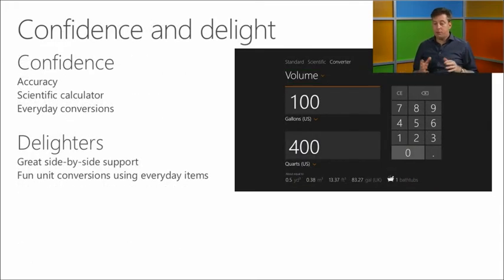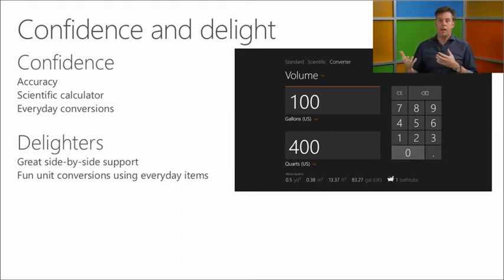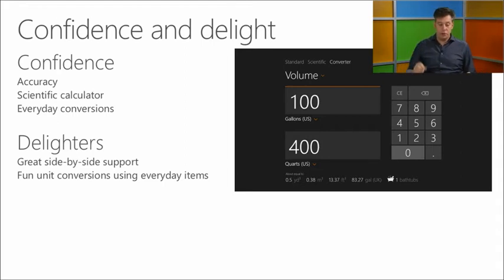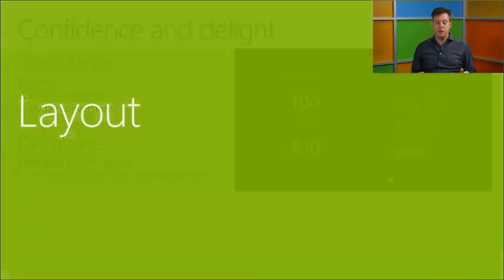Thinking about confidence and delight — confidence is in accuracy. You don't want the wrong numbers when you do a calculation. But also having the scientific calculator and everyday conversions is new in this app compared to the desktop calculator. The fun unit conversions — like bathtubs or jumbo jets — are a delight, but they also give you information.